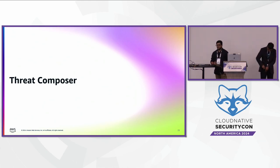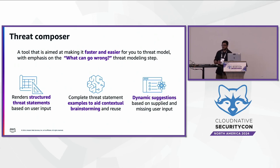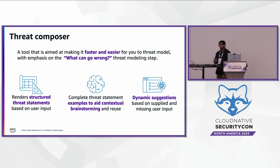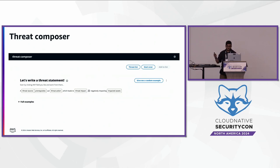How many of you have built or written these threat statements within your organizations before? You might have seen how tedious it gets across architectures at scale. We have a tool called Threat Composer. It gives you a contextual brainstorming ability — you can gather your teams across the adversary, app security, and business personas. It provides dynamic suggestions and renders threat statements while you're working, making it easier to generate a threat model for your architecture. You can link assumptions, mitigations, and create a matrix at the end.